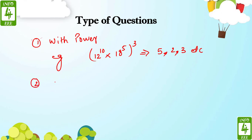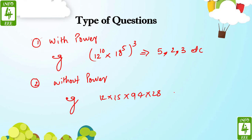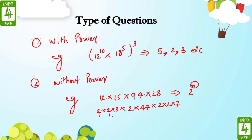The second type of question is without power. For example: 12 × 15 × 94 × 28 — what is the highest power of 2 in this expression? So 12 breaks as 2×2×3, 15 has no 2, 94 has only one 2 giving 47, and 28 is 2×2×7. Total count of 2s is 5, so the highest power of 2 is 5. This is easy to calculate manually, but we need to understand the trick.